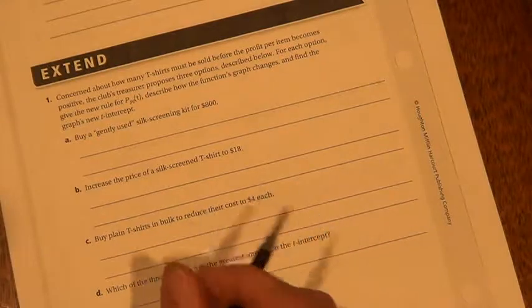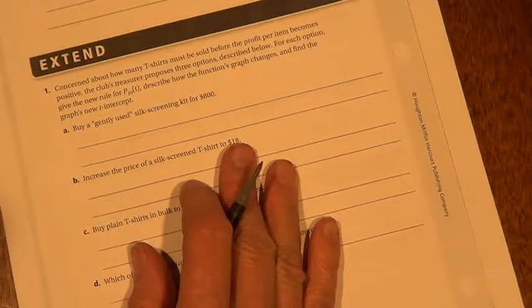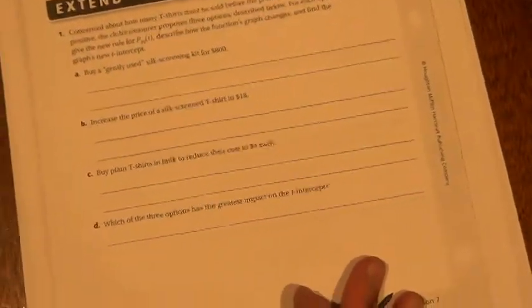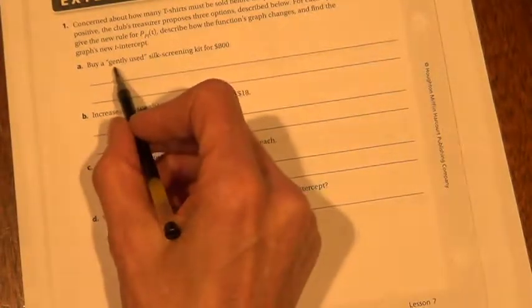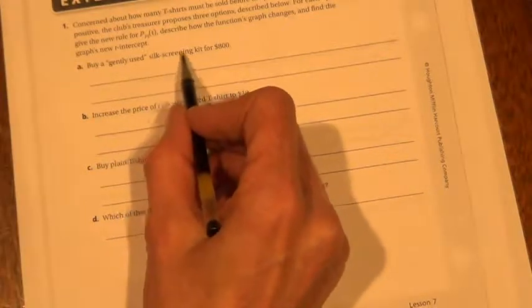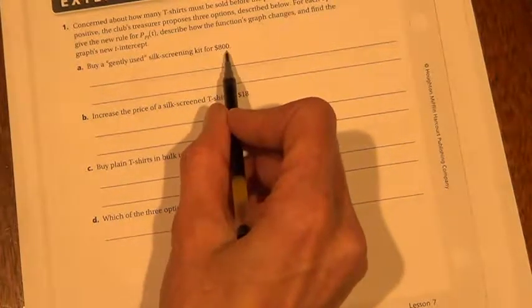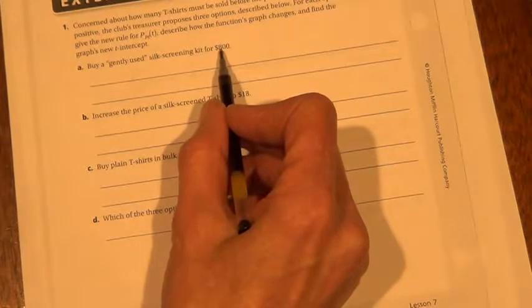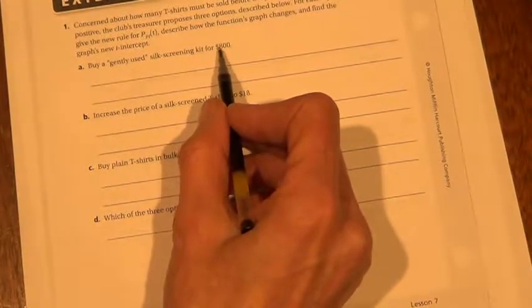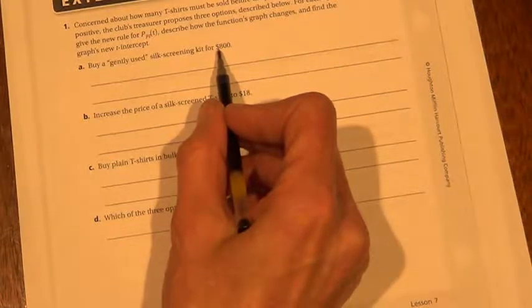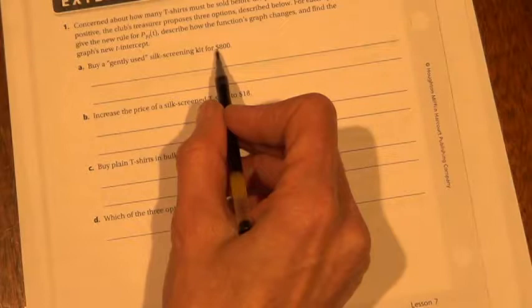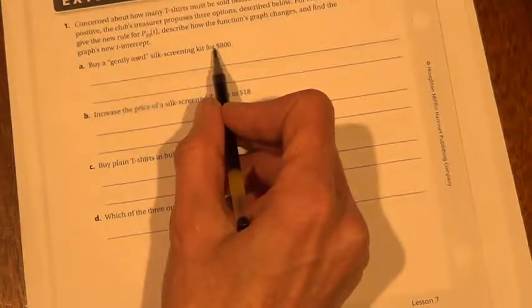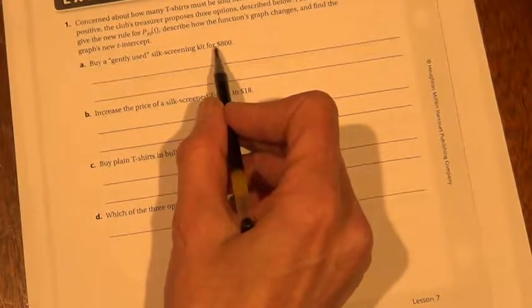So now they want you to go through and give them different options. The club's still not satisfied, and these questions are so important that you get them. So they're thinking about buying a gently used silk screening kit for $800. So you're going to go back to the original equation, and you're going to plug in $800 instead of the $1,000. And then they want you to explain, once you get that equation, what the vertical stretch is, and how much less it is than the original equation. And then also what the profits per shirt are.